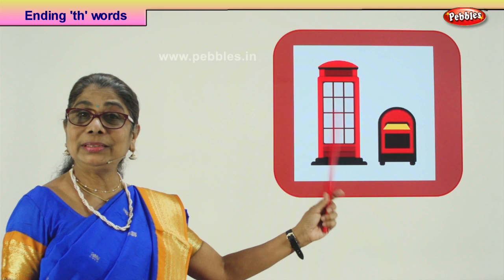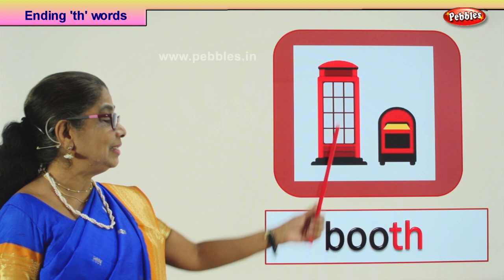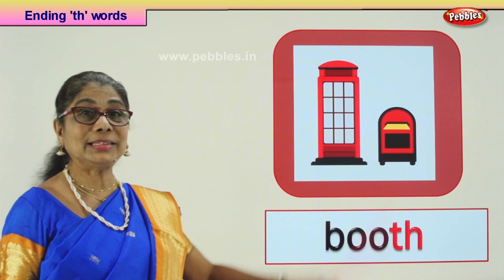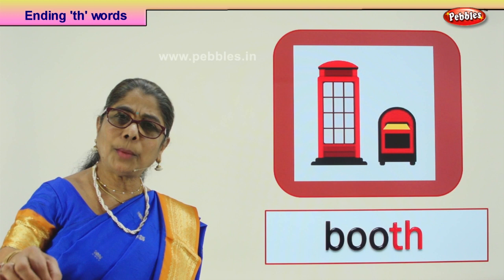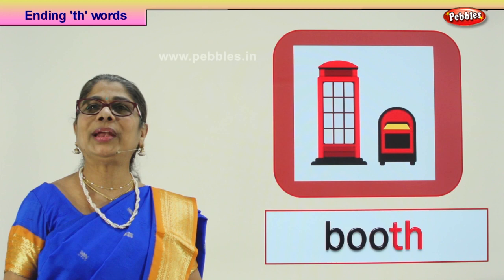Look at this — what do we see here? If you want to make a call when you are outside, you must go to a telephone booth. This is called a booth. You go, open this door, and there is a telephone inside. It is a telephone booth — public. Anybody can go, drop a coin, dial the number, and you can talk. What is this? Booth.